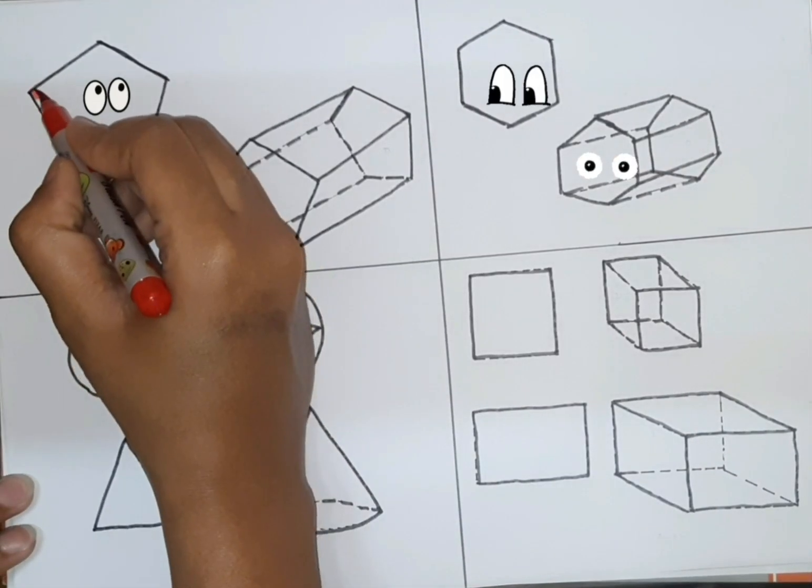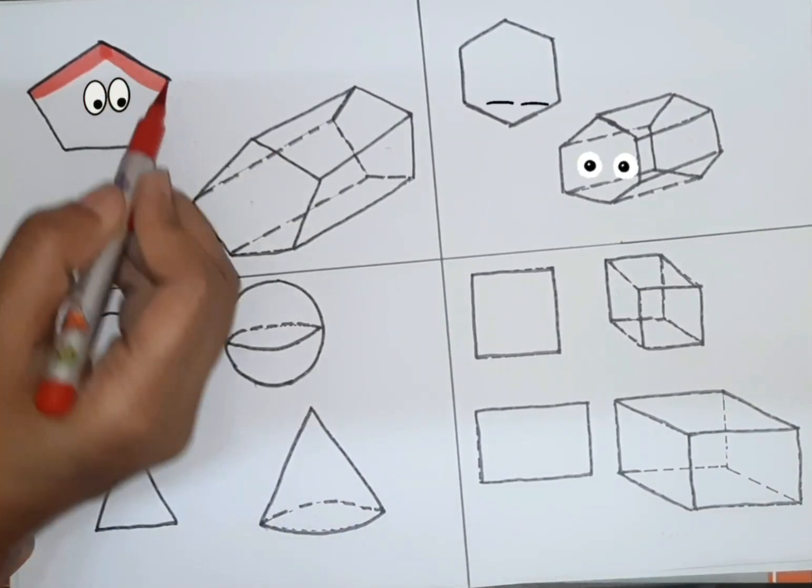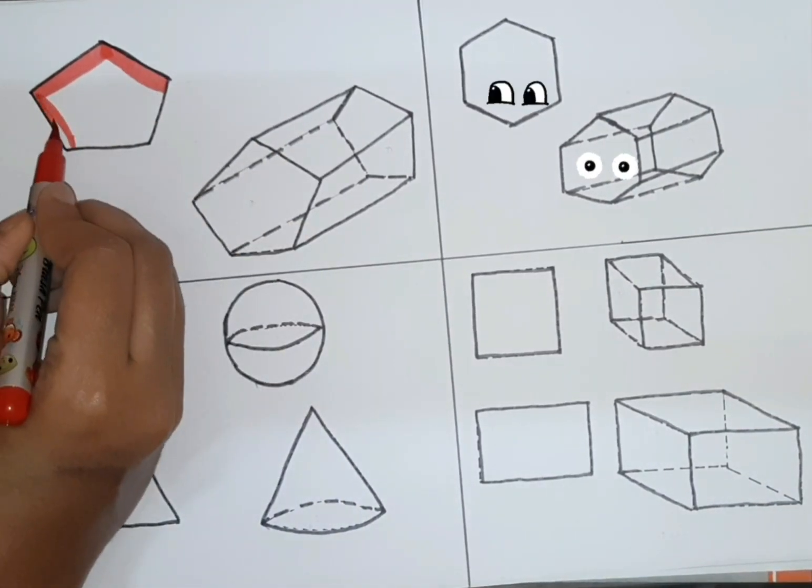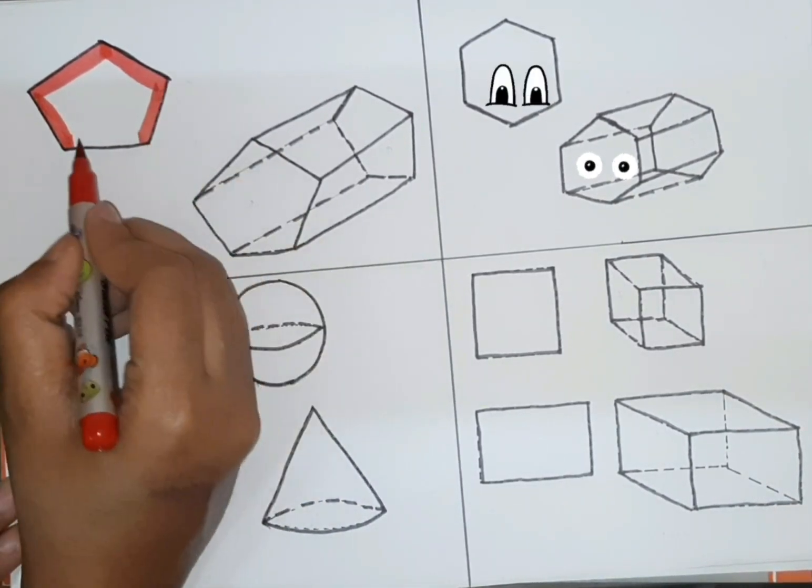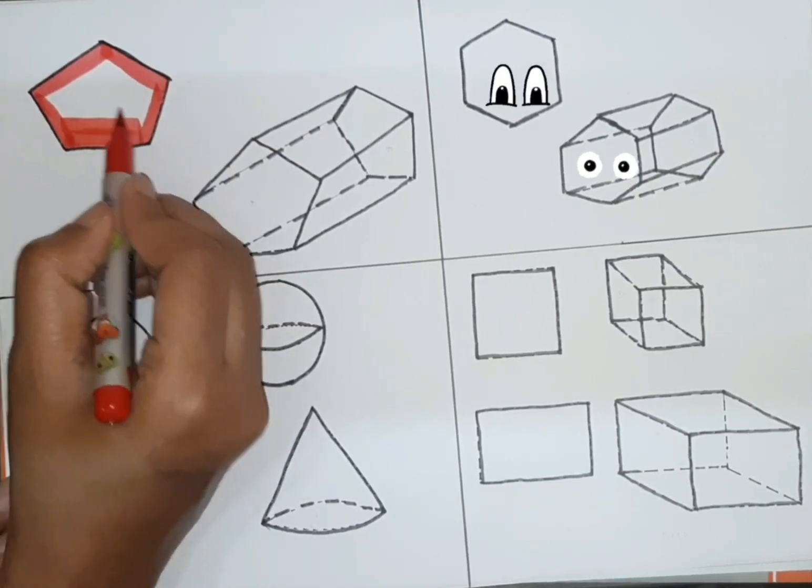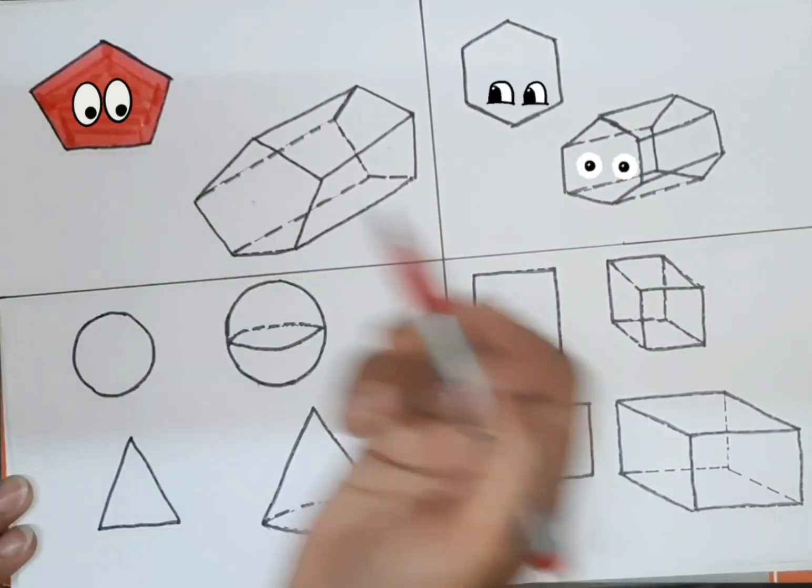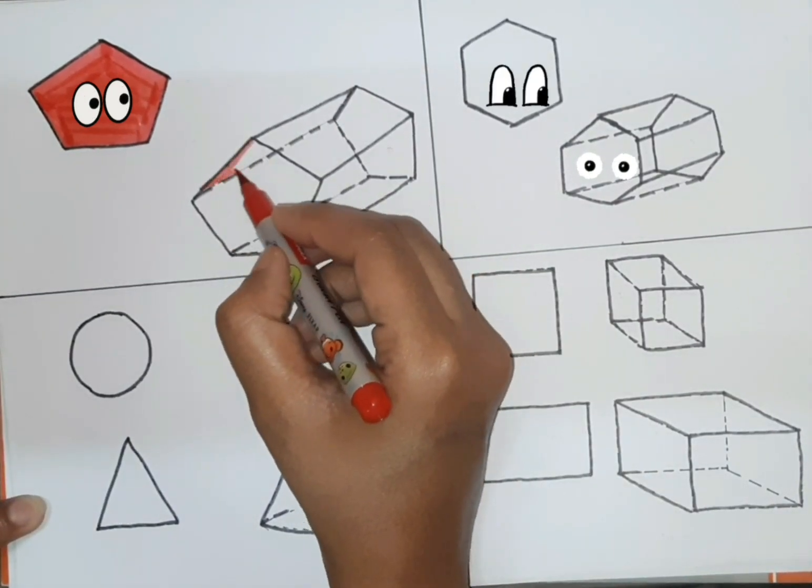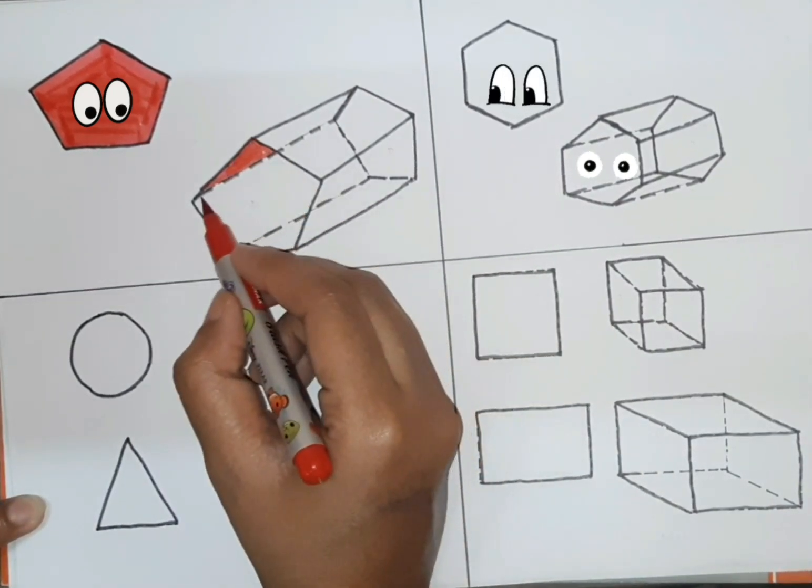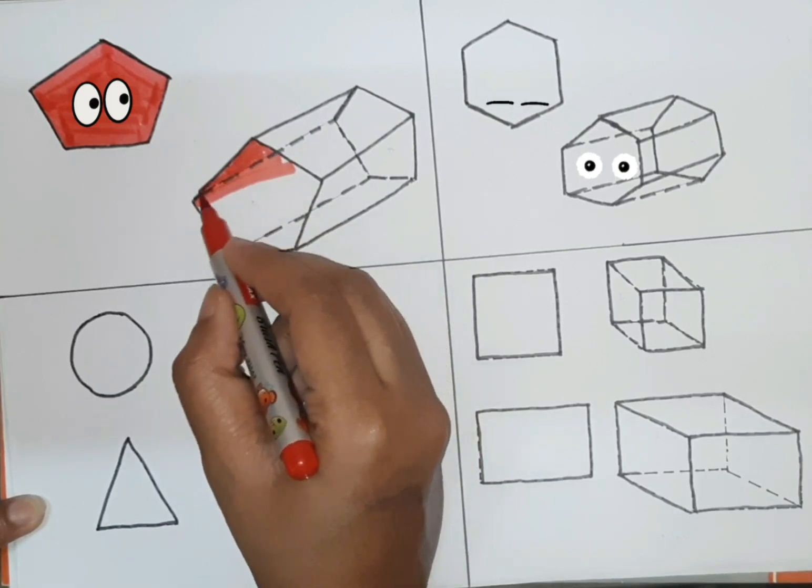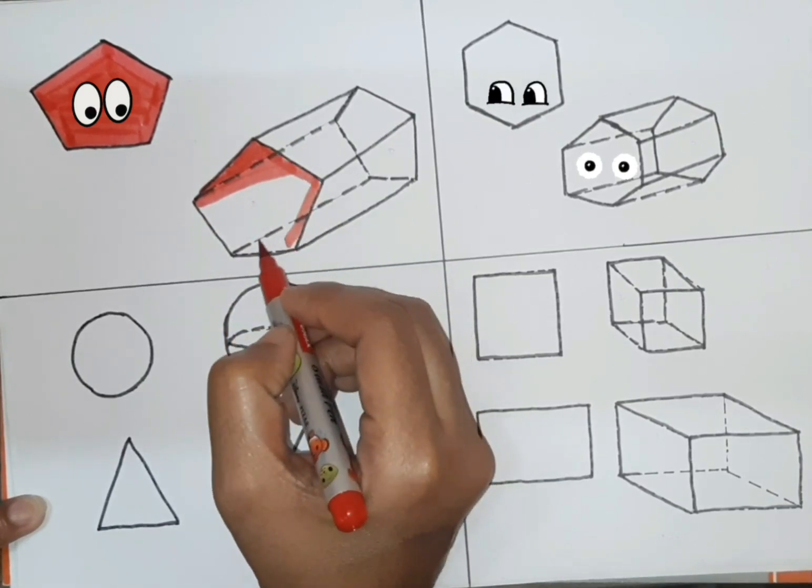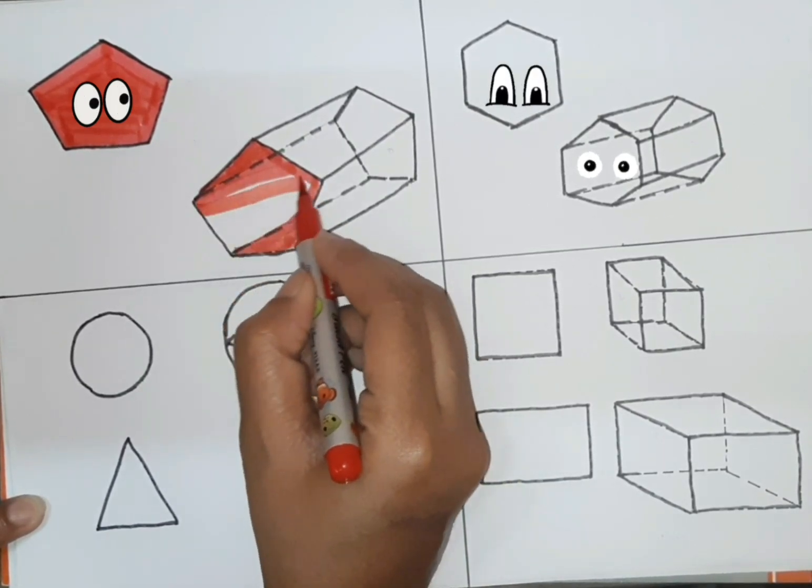Now time is coloring. Let's start with rainbow color. Red color. We are filling in pentagon with red color. Now pentagon with 3D shape. Red color, first color of rainbow.